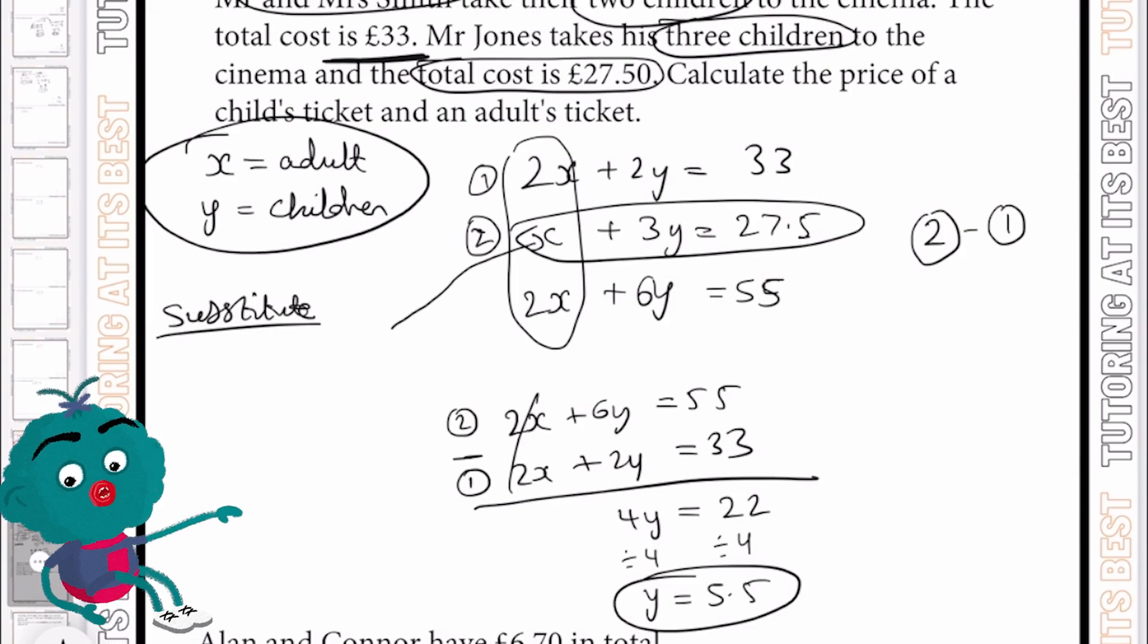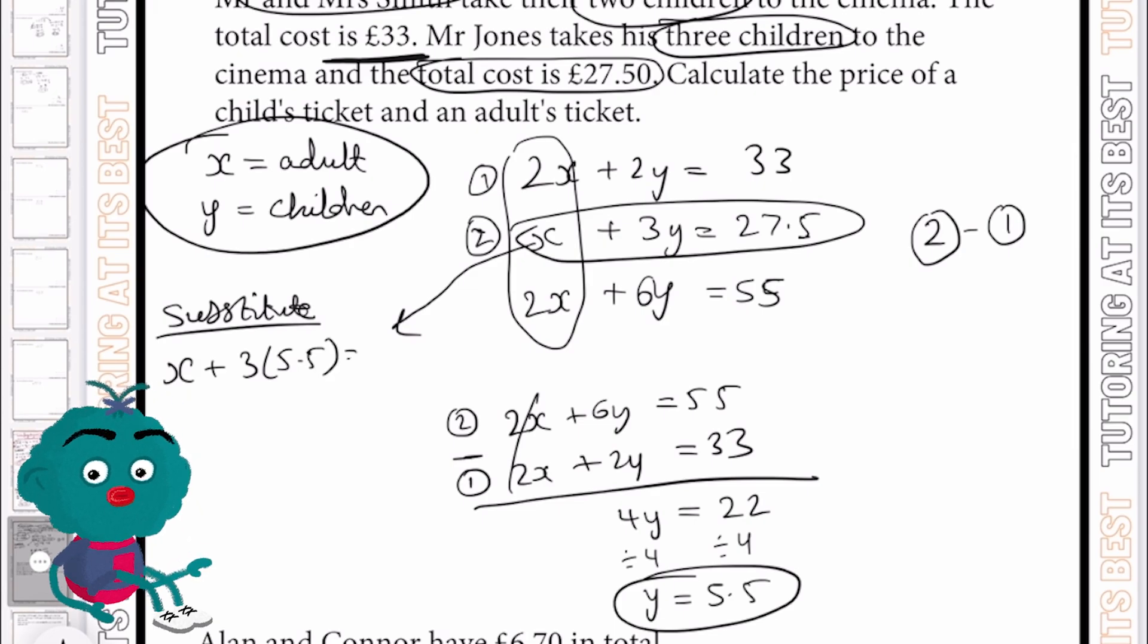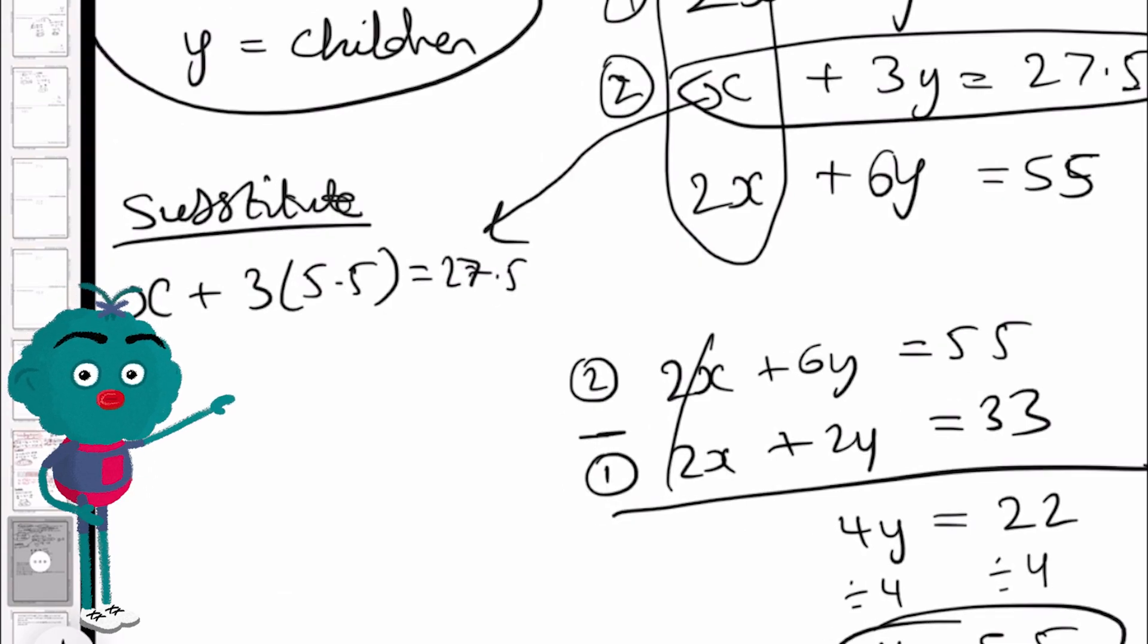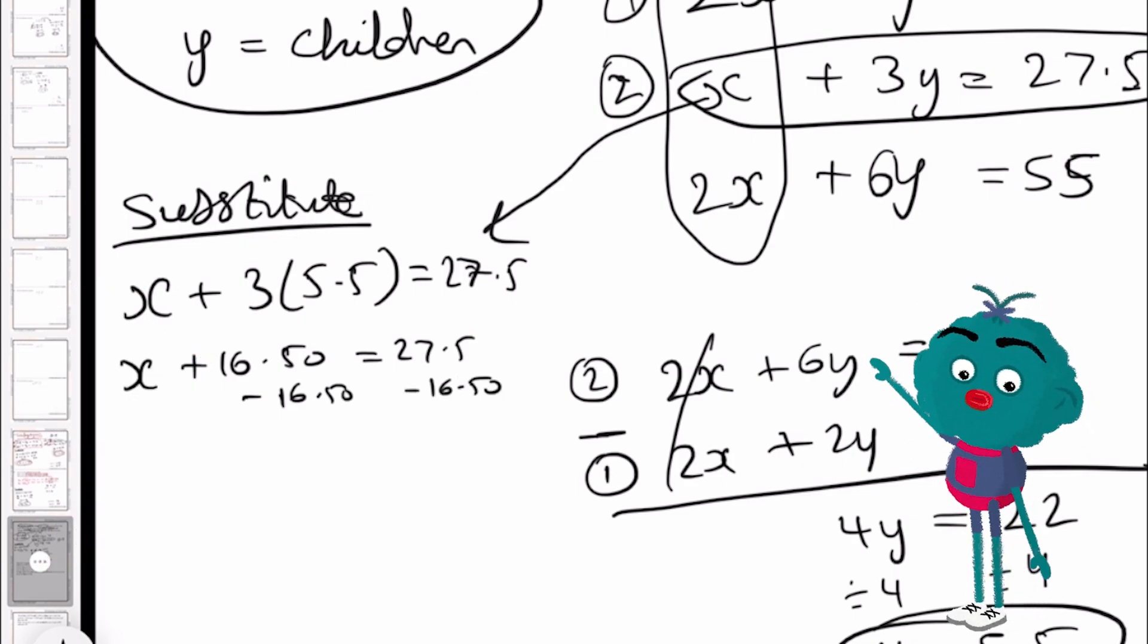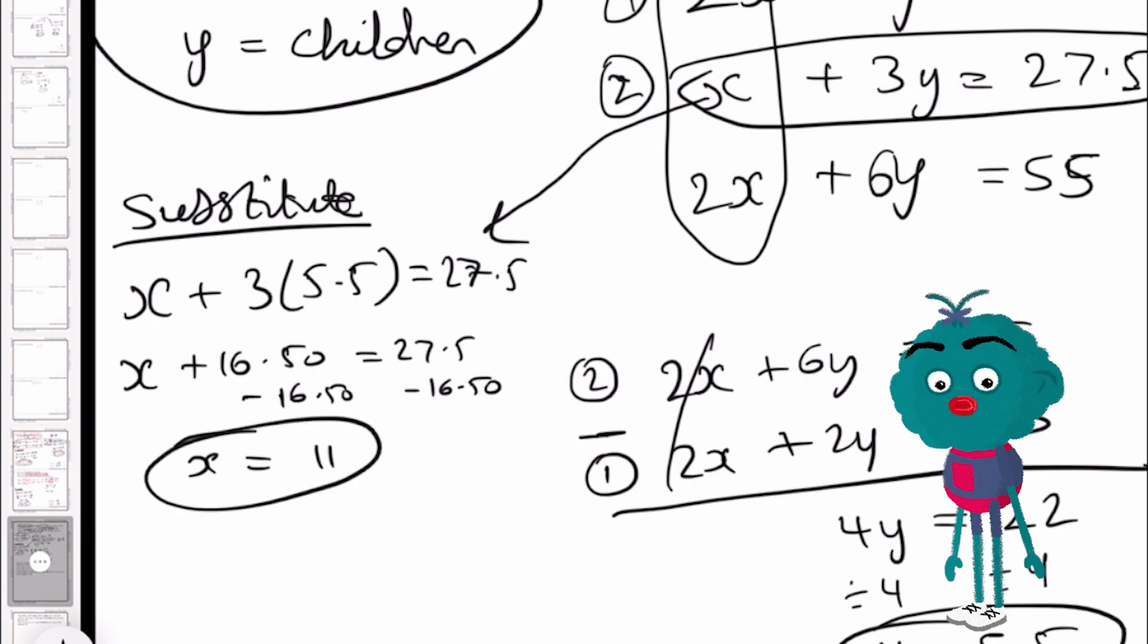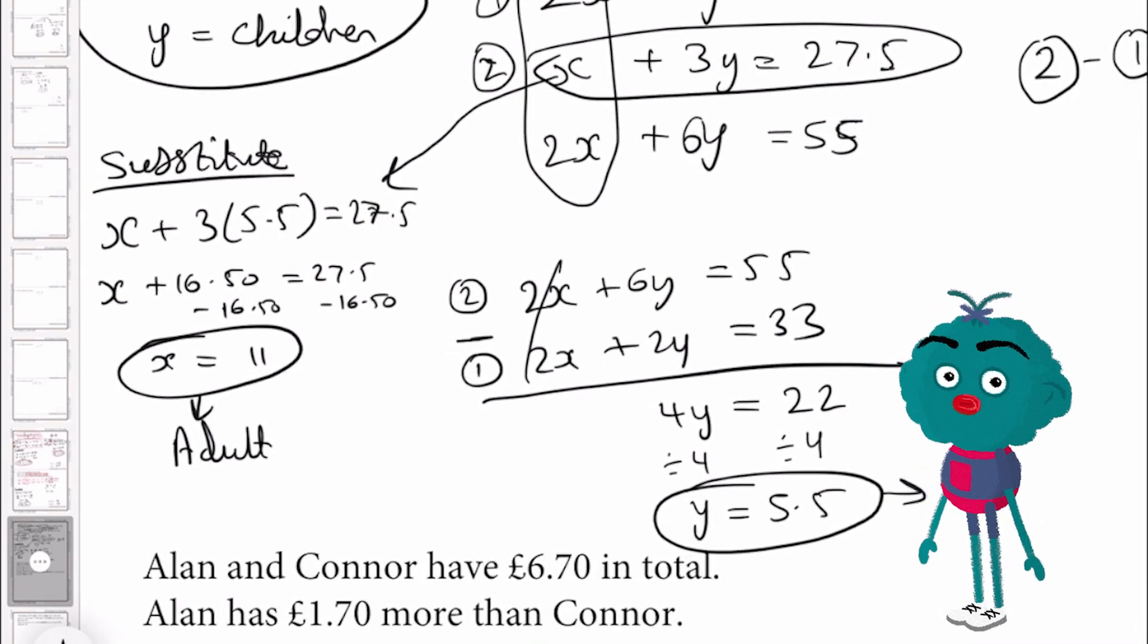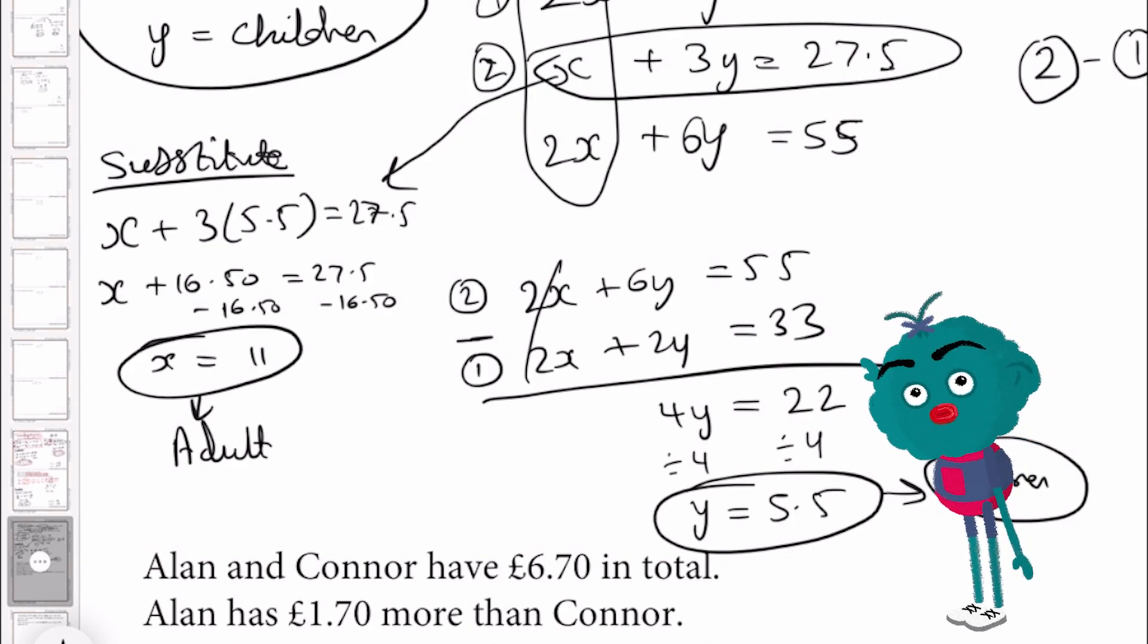I'll take my second equation, which is x plus 3 times £5.50, which equals 27.5. I'll multiply this out here. So I know we have x plus £16.50 before minusing £16.50 on both sides. And by doing so, I now know that x equals £11. And that there is our adult ticket price. So we've got £11 for adults and £5.50 for our children.